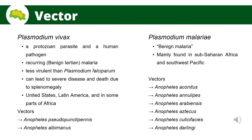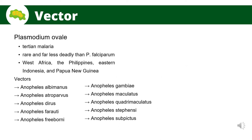Plasmodium malariae is a parasitic protozoan that causes malaria in humans. While it is present worldwide, it is a type of benign malaria not nearly as dangerous as Plasmodium falciparum or Plasmodium vivax. Its vectors are Anopheles aconitus, Anopheles annularis, Anopheles arabiensis, Anopheles aztecus, Anopheles crucians, and Anopheles darlingi.